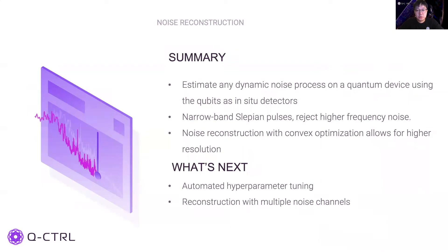In summary, we have shown a new approach to reconstructing the noise spectrum. As demonstrated in both simulation and experiments, we use narrow-band Slepian pulses to optimally estimate the noise spectrum properties without leakage from higher-frequency noise, and we use the convex optimization approach to reconstruct the noise power spectral density with high resolution. Further work will look at automating the hyperparameter tuning process for our method and applying the algorithm to reconstruction problems with multiple noise channels. Thank you for watching this presentation from Q-Control. If you have any questions, you can reach out to the team by going to Q-CTRL.com.